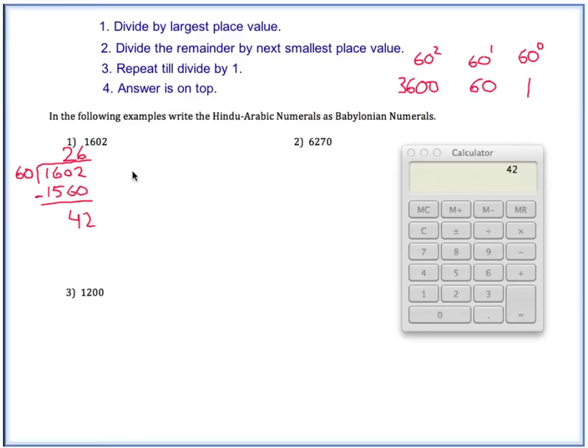Now this number is going to be the remainder. So then divide the remainder by the next smaller place value. So what place value is smaller than 60? Well, it's just going to be 1. So we're going to divide this by 1, and that just equals 42. And now your answer is going to be on top. It's going to be 26 and 42. So all we have to do is rewrite this now using our Babylonian symbols. So 26, leave a space, and 42.